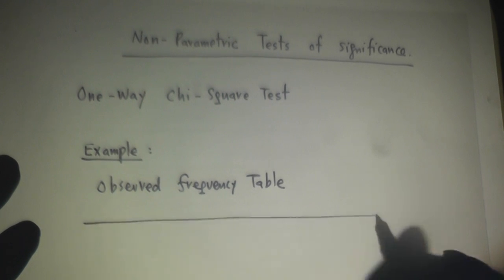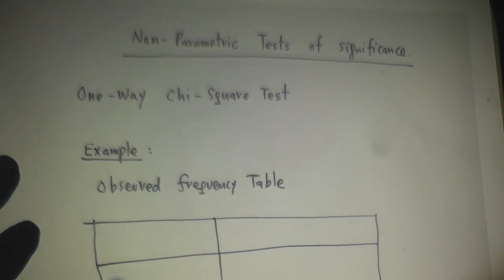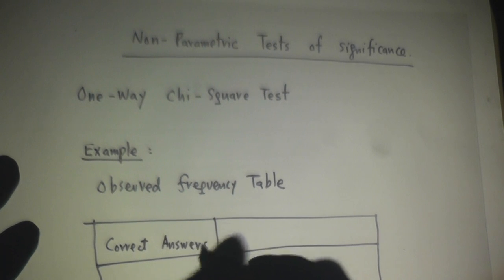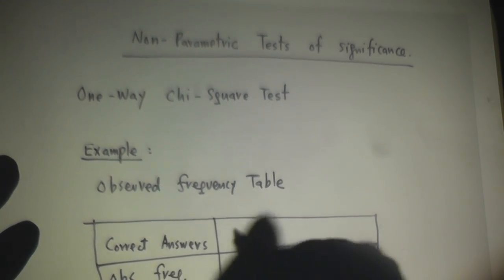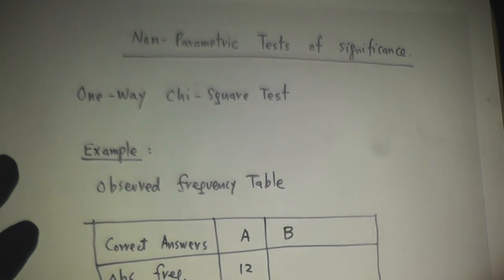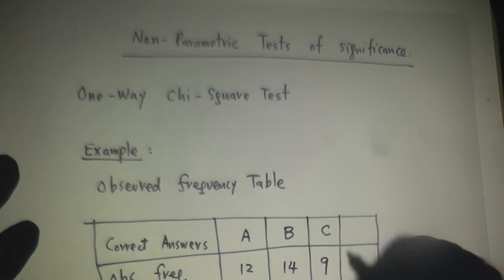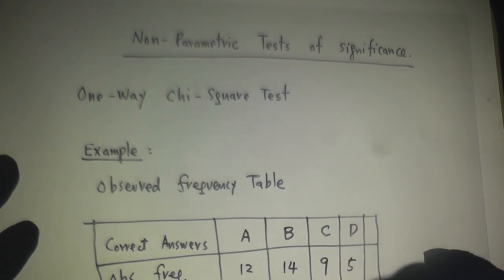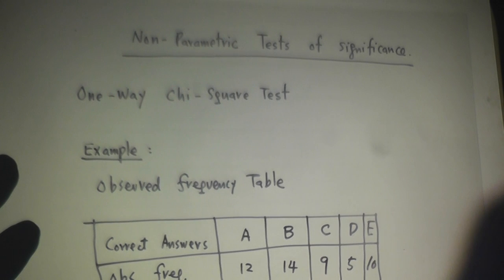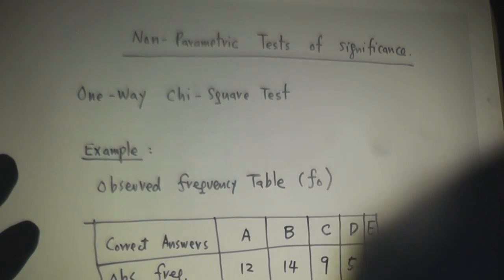And let's see. How many times do you find A is the correct answer? 12 times. How many times find B as the correct answer? 14 times. How many times find C as the correct answer? 9 times, D 5 times, and E 10 times. This is what we call the observed frequency table, and the abbreviation for it is fo.